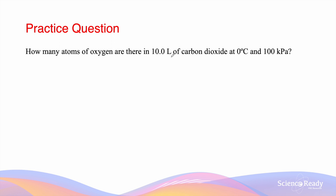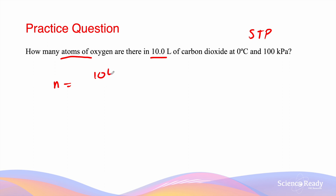This next question asks how many atoms of oxygen are in 10 liters of carbon dioxide at 0 degrees Celsius and 100 kPa. We know that is STP. To work out how many atoms of oxygen there are, we need to find how many moles 10 liters of carbon dioxide represents, then multiply by Avogadro's number. So n equals 10 liters divided by the molar volume at STP, 22.71 liters, giving approximately 0.44 moles.